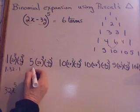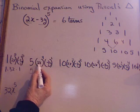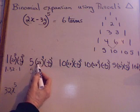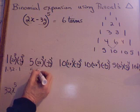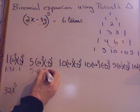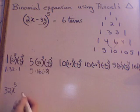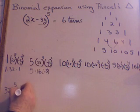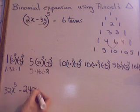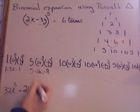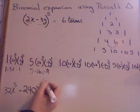Next term: a five times two to the fourth, which is 16, times negative three to the first, which is negative three. Multiplying all of that gives negative 240. Then for the variables: x to the fourth, y to the first.